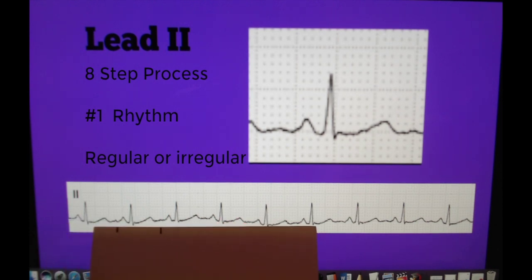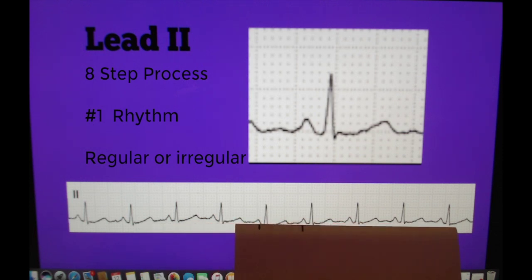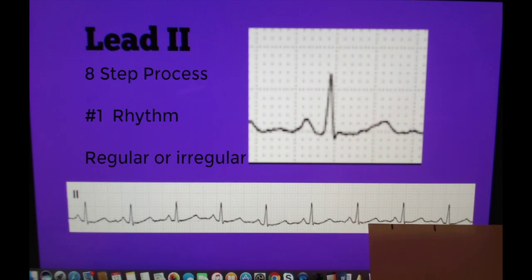Second we are going to look at the atrial rhythm and do the same thing. And we can see here that we also have a regular atrial rhythm. So for step one, both atrial and ventricular rhythms are regular.